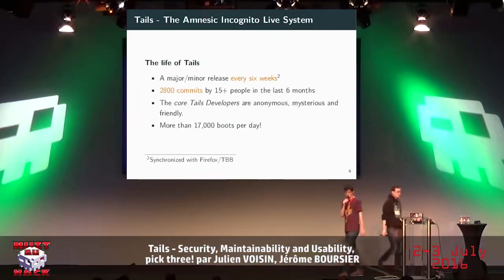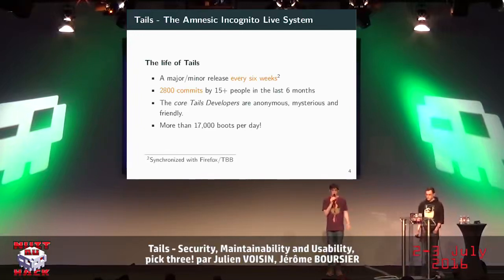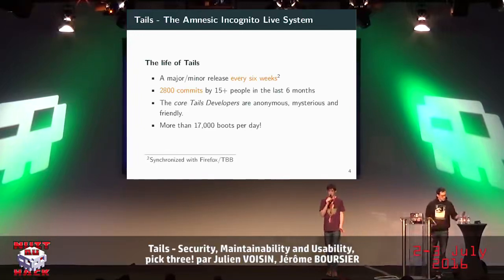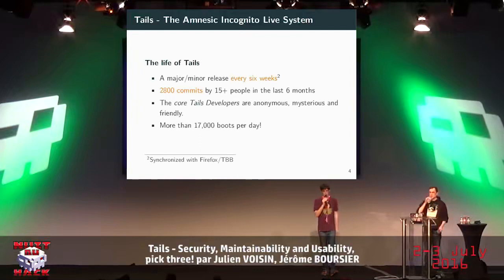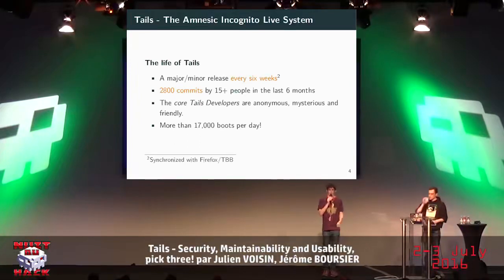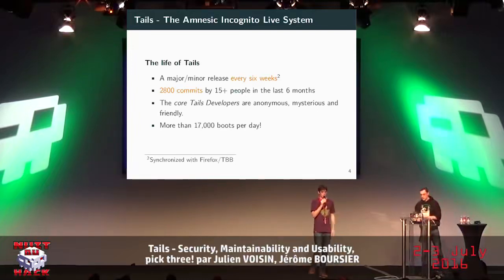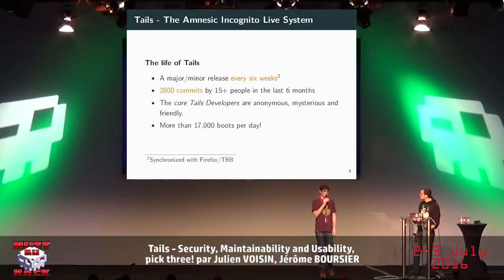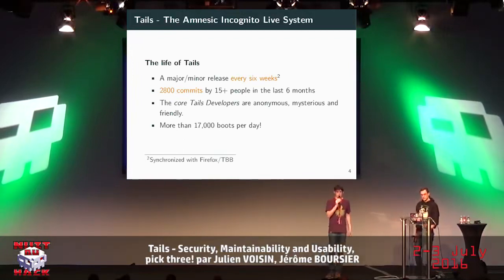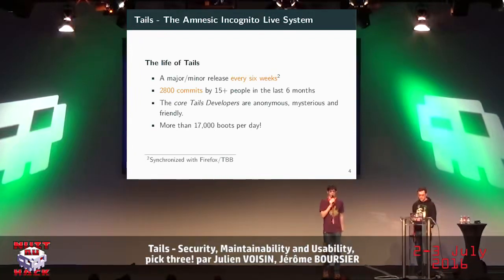Tails is a very active project. There is a major release every few weeks — almost every six weeks — with a lot of commits by several contributors. The very core developers want to stay anonymous, but they are very friendly and accessible if you want to talk to them. There are about 17,000 boots per day, which is a huge number.